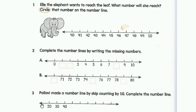Third question: Pallavi made a number line by skip counting by 10. Complete the number line. Starting from 20, then 30, 40 — when we skip count by 10, after 40 comes 50, then 60, 70, 80, 90, 100. Thank you children, see you in the next class.